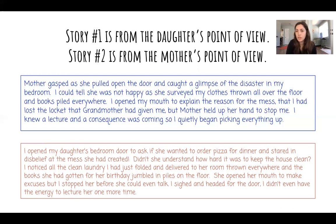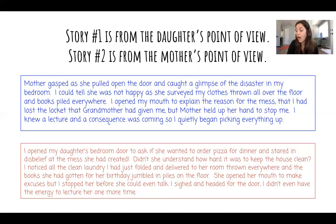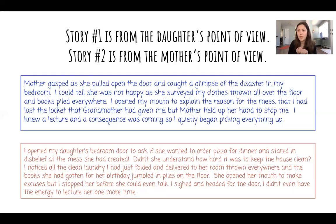What I'd like for you to do is jot down two events from this book so far that you think would have been different from a different character's point of view. I think that when Crash went to Penn's house for dinner, that event would be very different from Penn's point of view and we would have gotten a better idea of Penn's feelings.